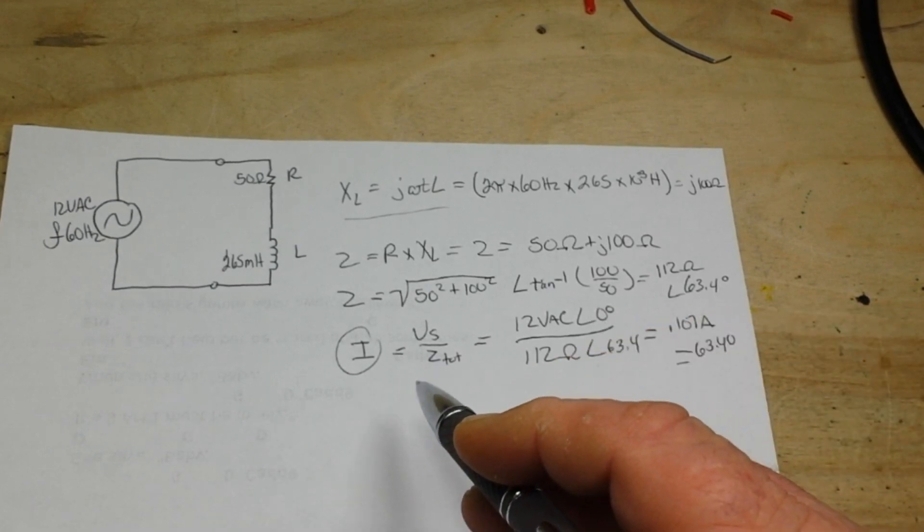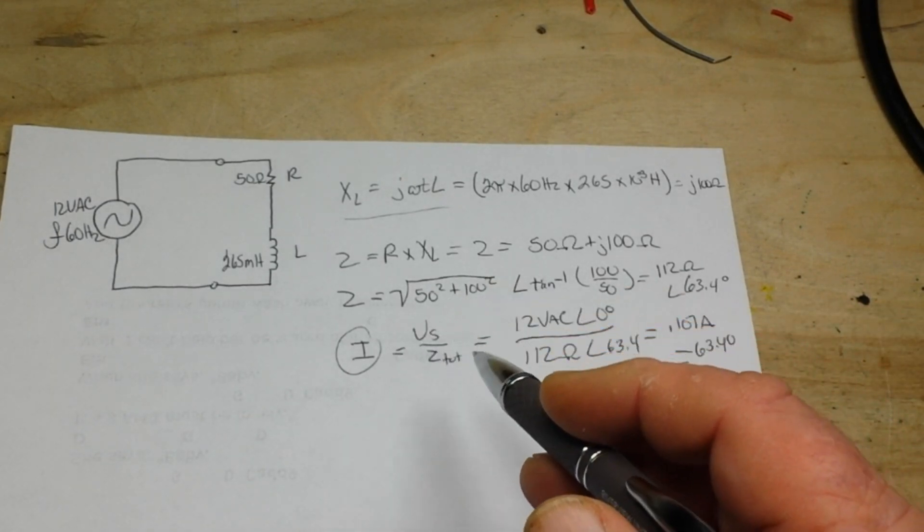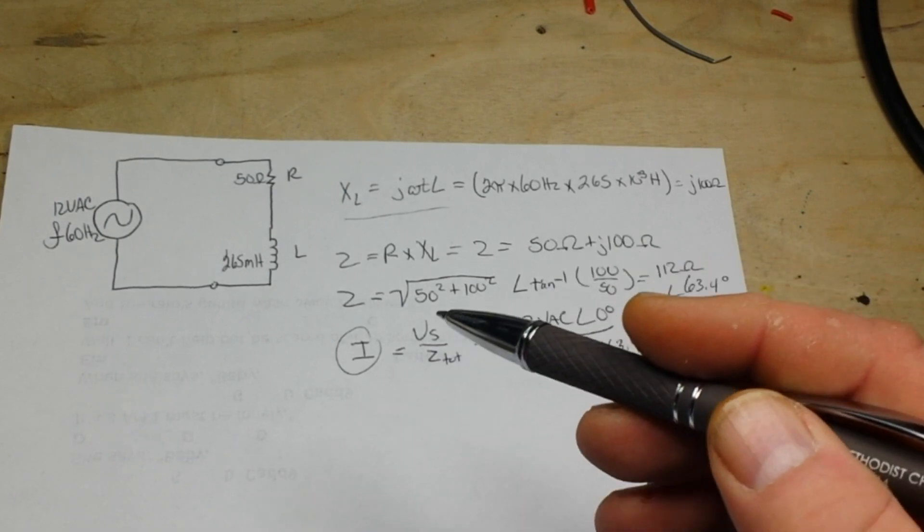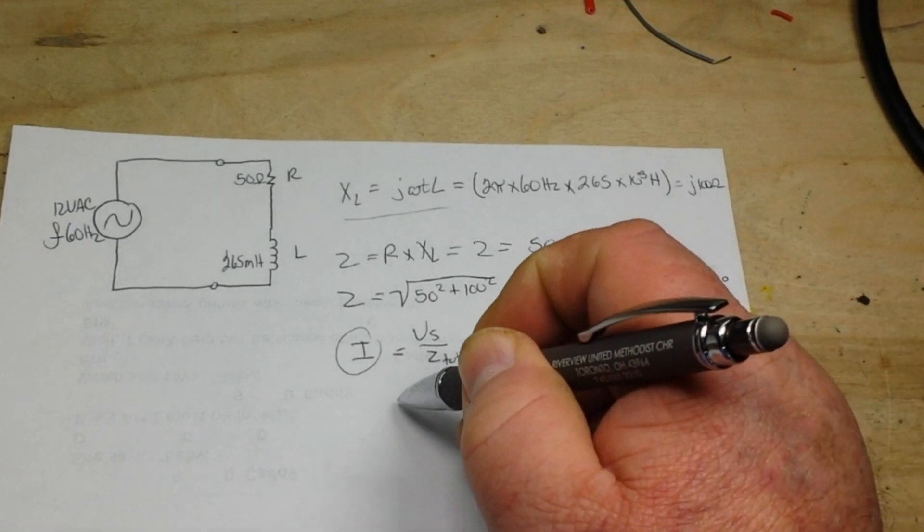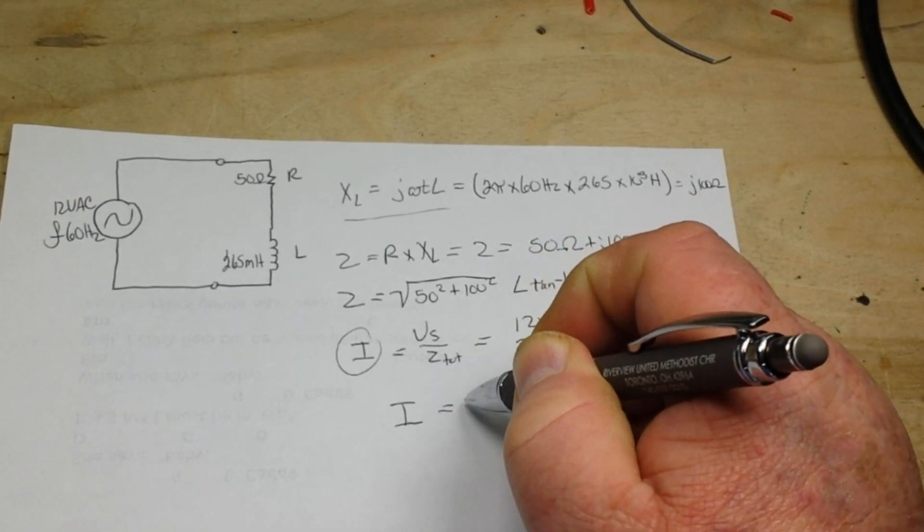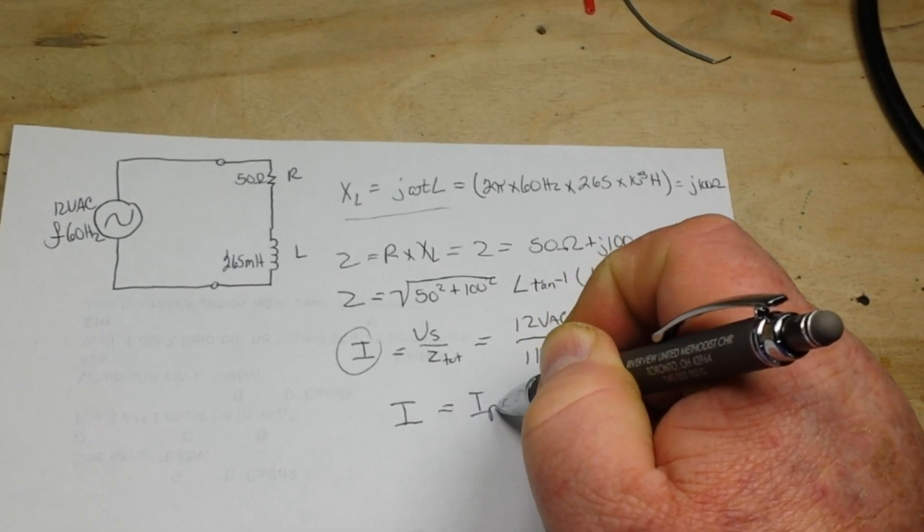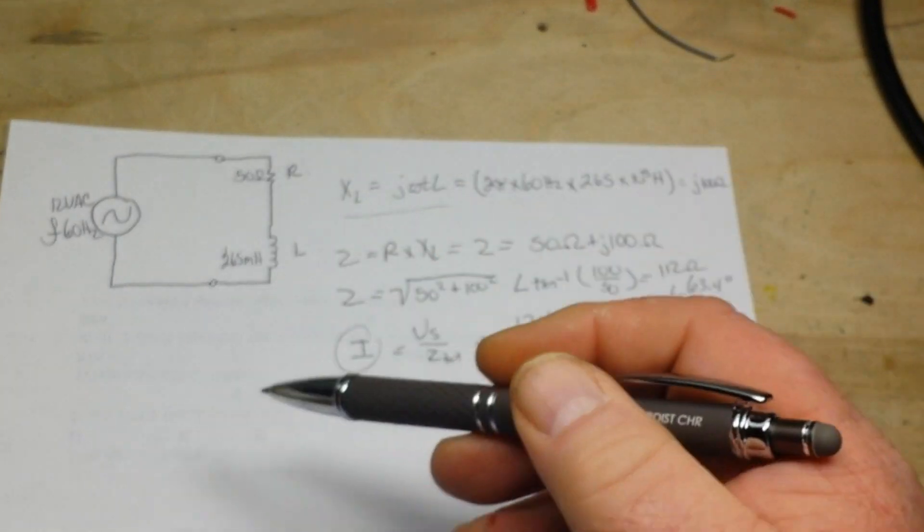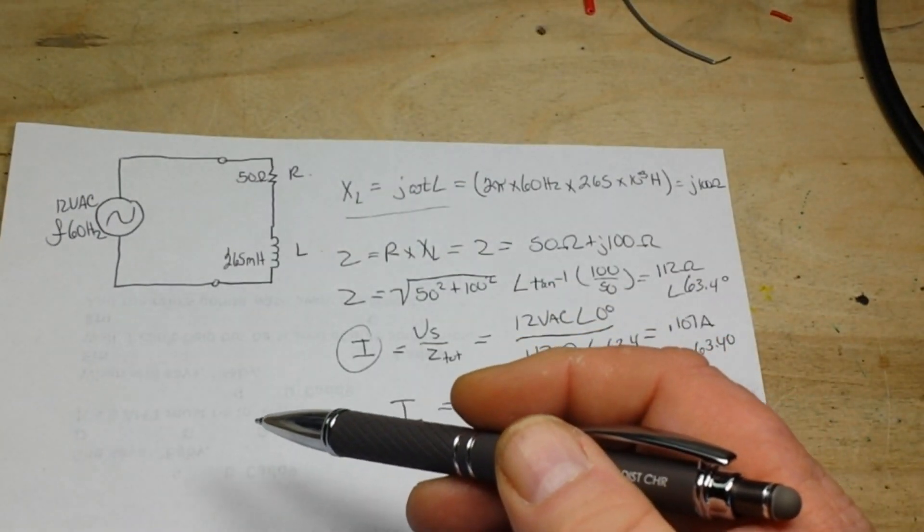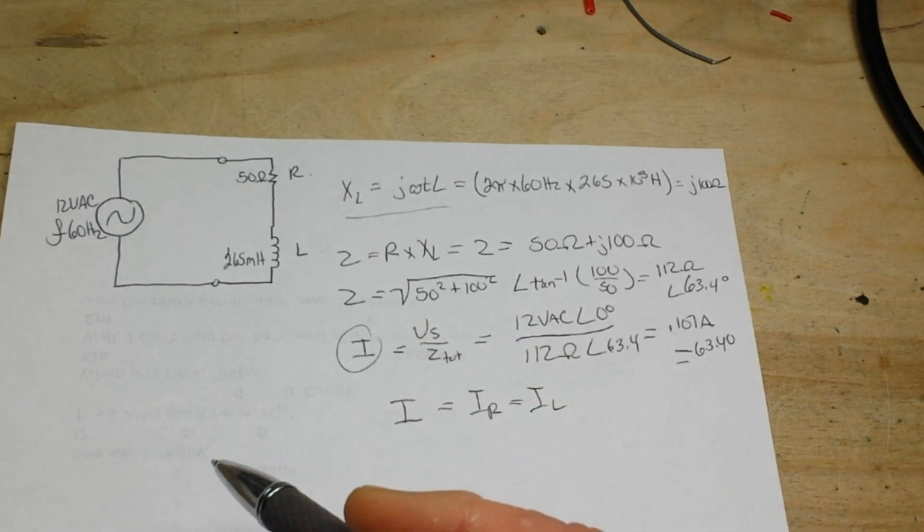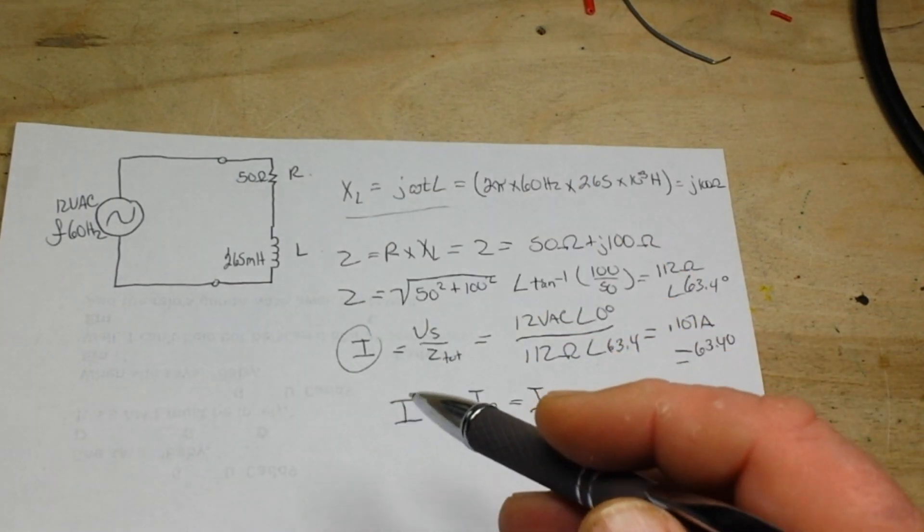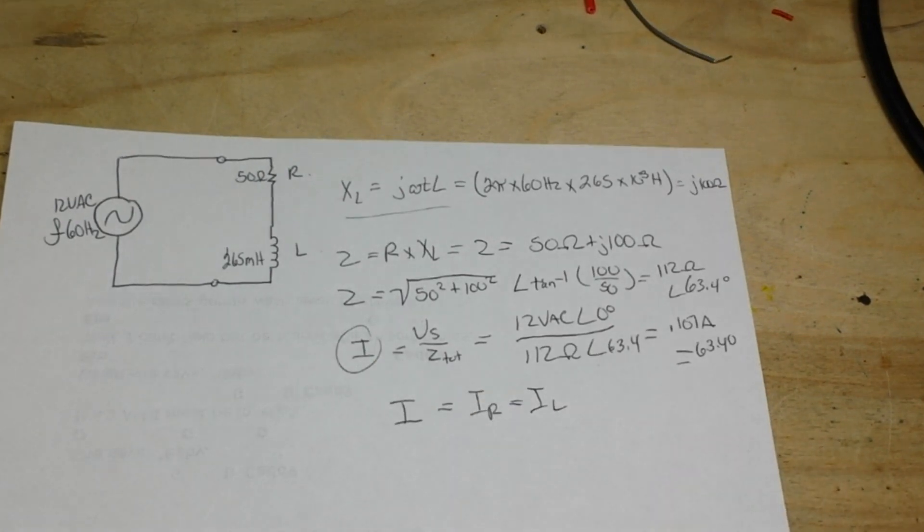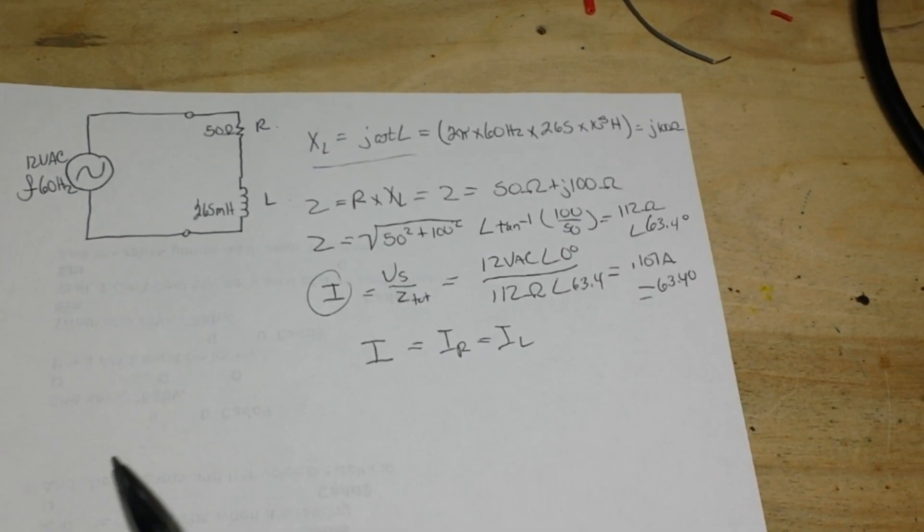Since this is a series circuit, then I is equal to IR is equal to IL. Now the voltage across the resistance and the inductor can be found using Ohm's law for an AC voltage divider. I'm not going to go too far into this or we're going to be here forever.